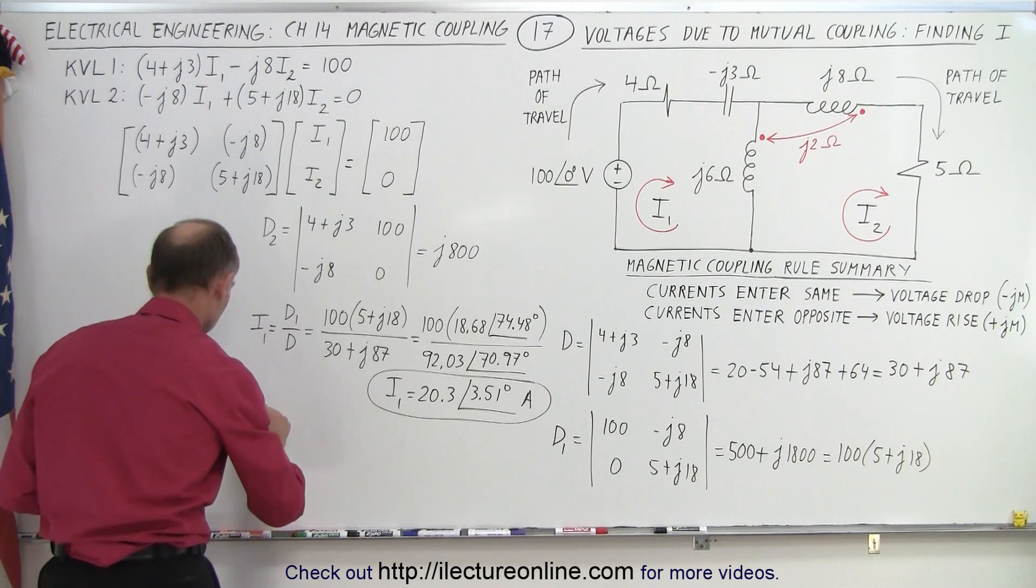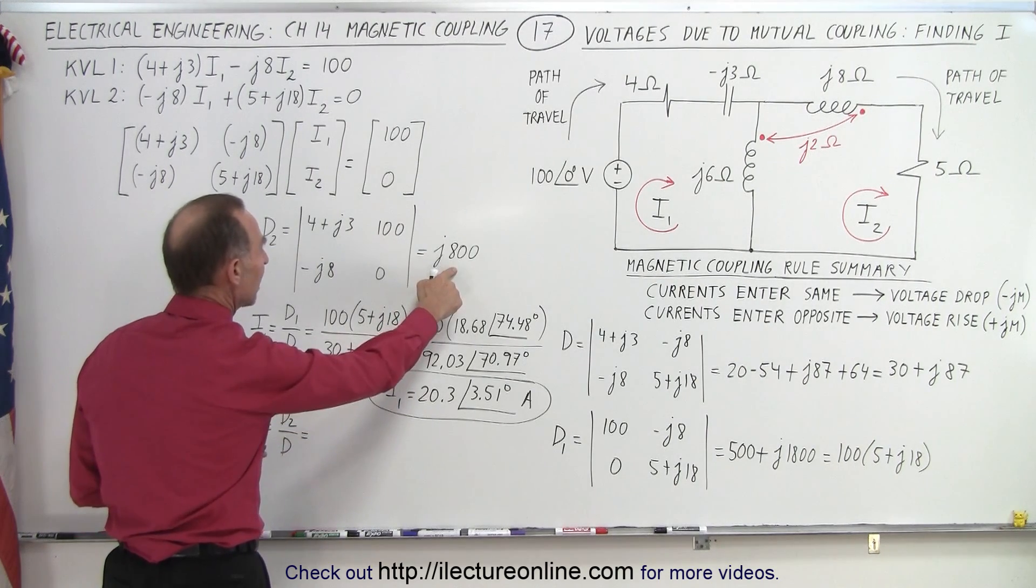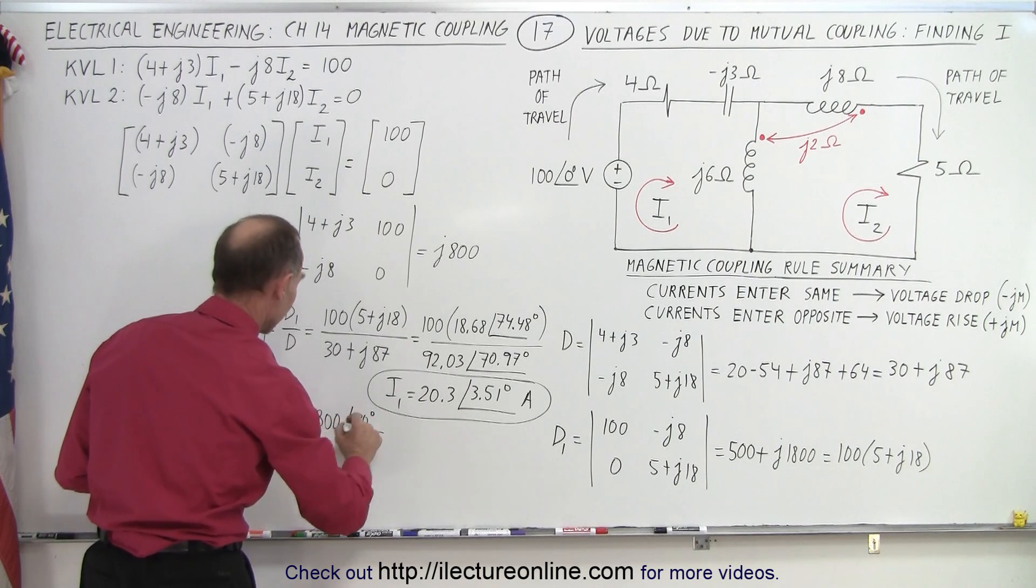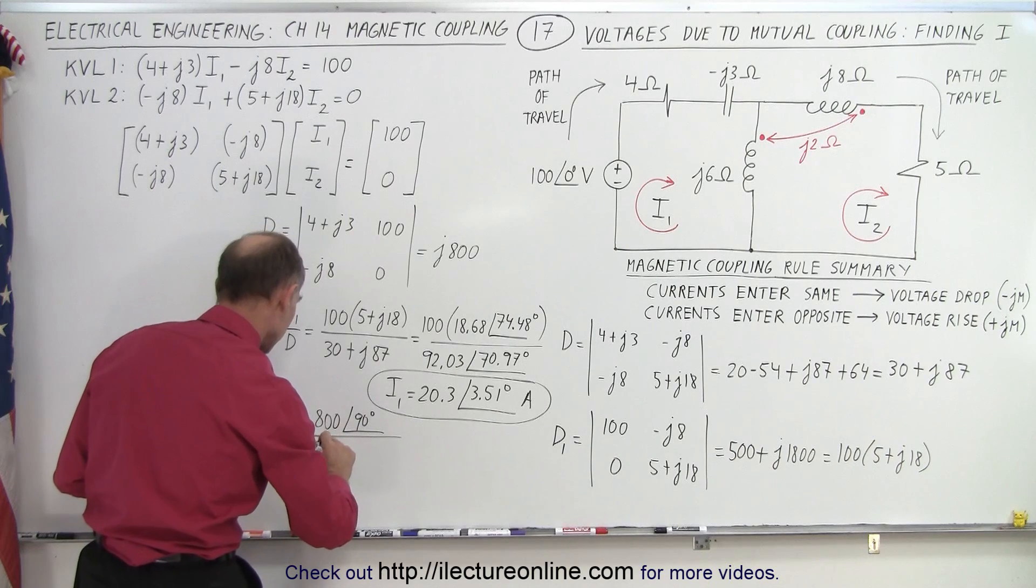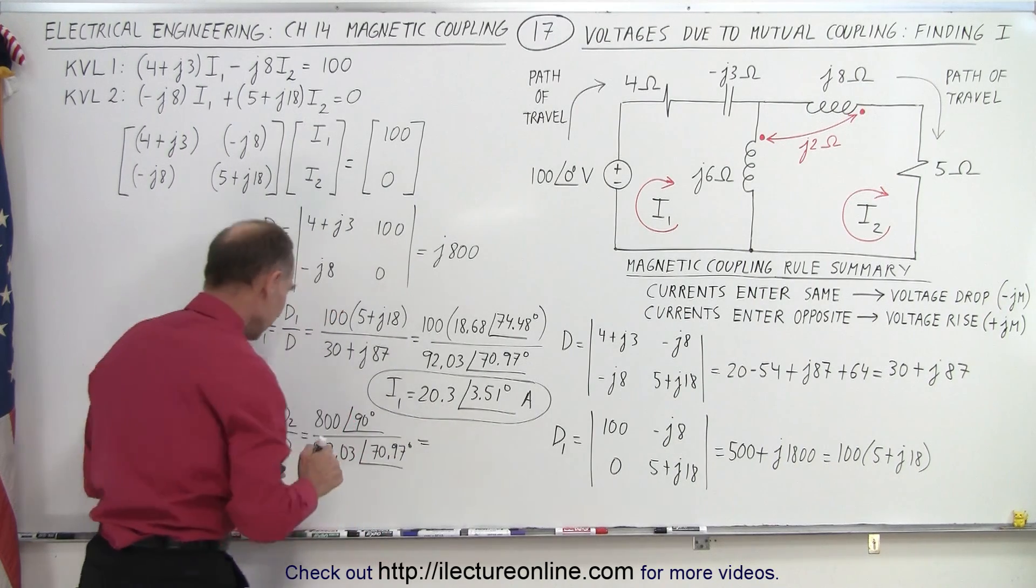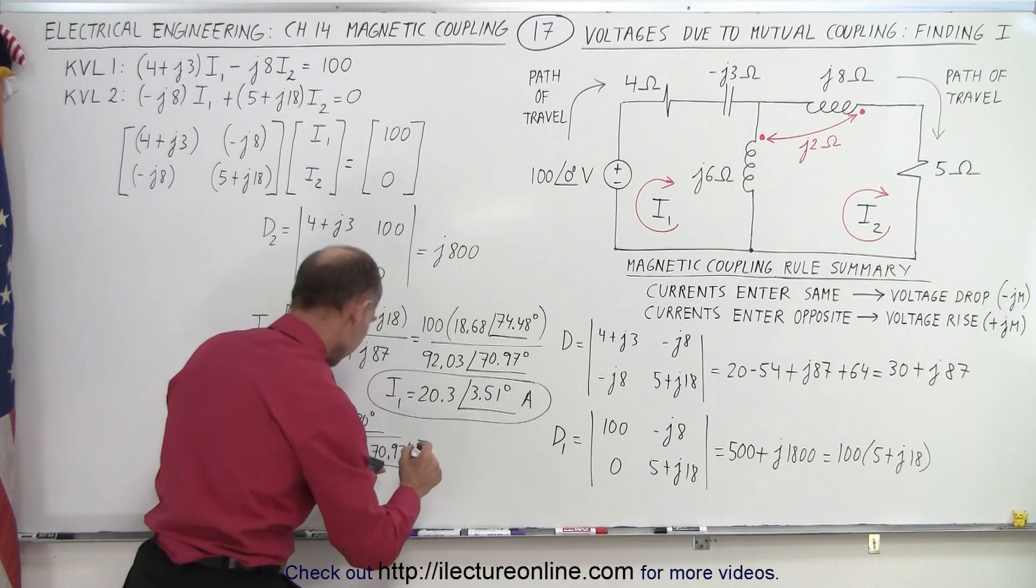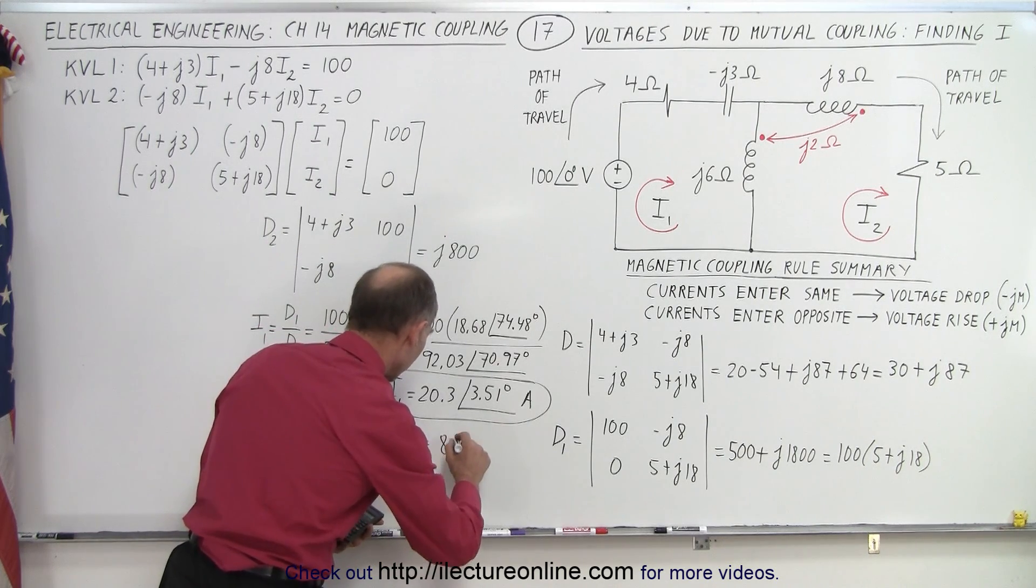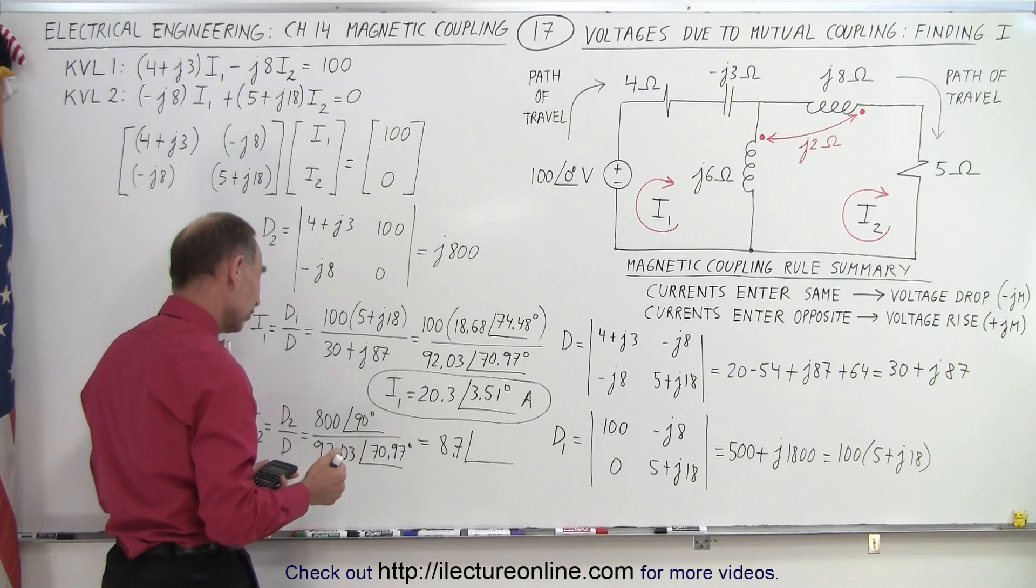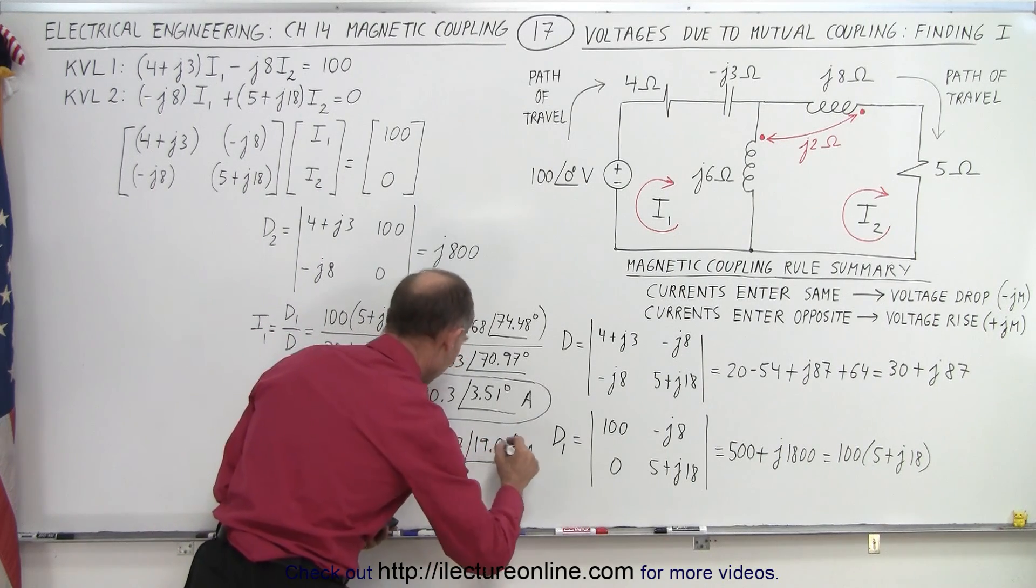Alright. We do the same now for I2. So for I2, that is equal to D2 over D. So in this case, D2 gives me J800 converted to the phase format. That would be 800 with a phase angle of a positive 90 degrees divided by, well D we already have the format right here, that would be 92.03 with a phase angle of 70.97 degrees. And 800 divided by 92.03 gives us 8.69, how about calling it 8.7. So 8.7 with a phase angle of 90 minus 71, that would be 19.03 degrees, and that's also in amps. And that would be I2.